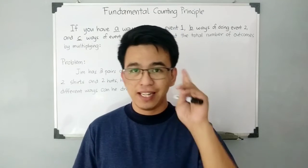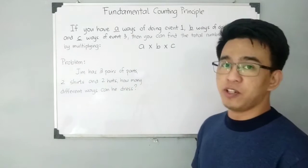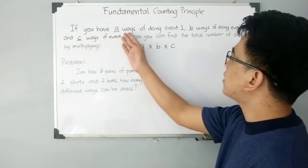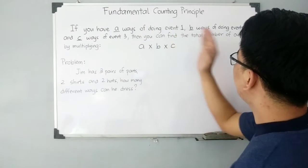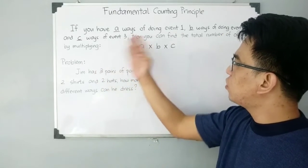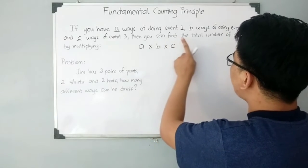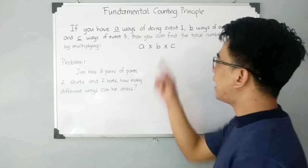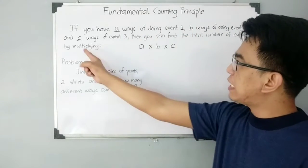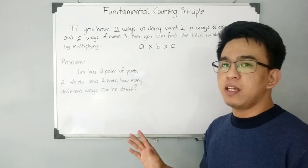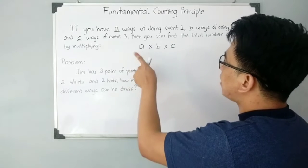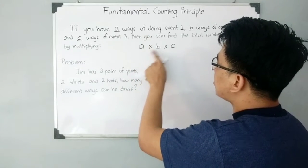So without further ado, let's do this topic. We have here the definition of the fundamental counting principle, in which if you have A ways of doing event 1, B ways of doing event 2, and C ways of doing event 3, then you can find the total number of outcomes by multiplying A, B, and C. Your A, B, and C are the number of different ways you can do a certain event. The formula is A times B times C.